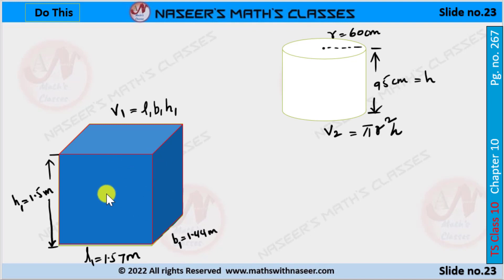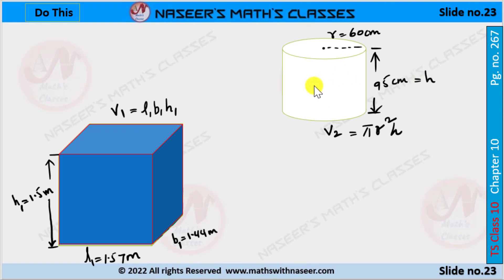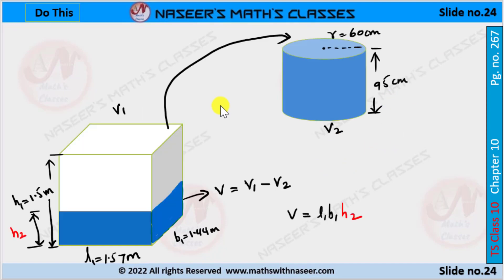The sump is in the form of a cuboid with length L1 = 1.57 meters, breadth B1 = 1.44 meters, and height H1 = 1.5 meters. Volume V1 = L1 × B1 × H1. The overhead tank is in the form of a cylinder with radius 60 centimeters and height 95 centimeters. Volume of cylinder V2 = π r² h.